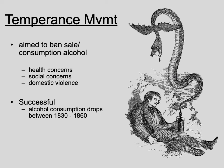They were successful — the consumption of alcohol dropped between 1830 and 1860. Some states, for example Maine, went as far as to ban alcohol. But prohibition was not enacted until the 18th Amendment in the early 1920s, and then repealed later on with the 21st Amendment.